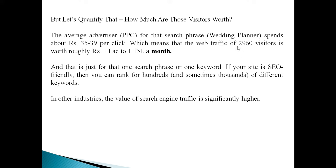If the average cost-per-click for 'wedding planner' keyword in paid ads is around 35 rupees, then 2,960 visitors multiplied by 35 rupees equals approximately 1 lakh to 1.5 lakhs worth of free traffic per month. If you were to get this same traffic through paid ads, you'd have to pay 1 to 1.5 lakhs per month — but with SEO, you get it for free.